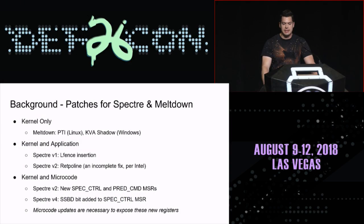But some of the other variations — two, if you don't trust the retpoline fix, and four — required microcode changes. This means you have to actually patch the CPU firmware in order for the software fixes to take effect. You have to do two things: get the kernel patches to use the new microcode, and then actually update the processor firmware so that the new capabilities are exposed to the operating system, so it can use them to protect you from these bugs.